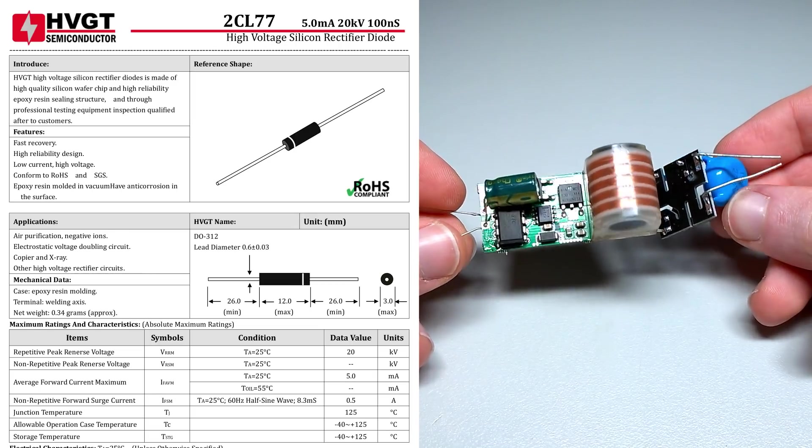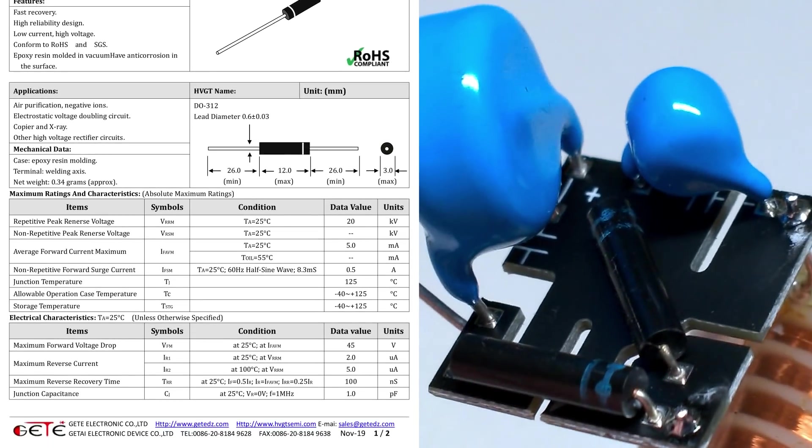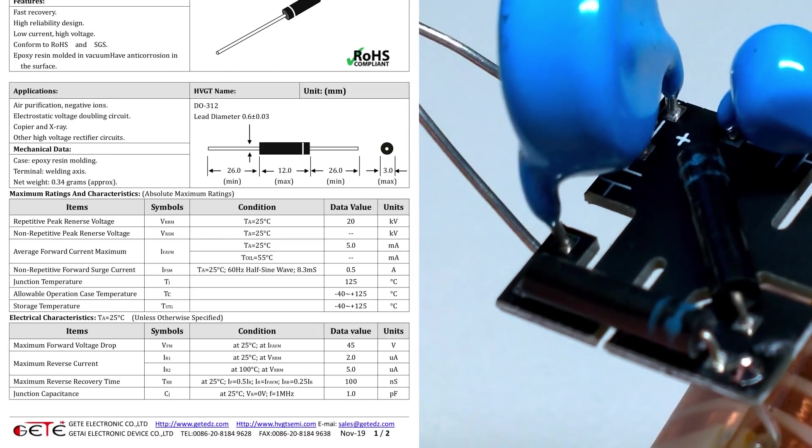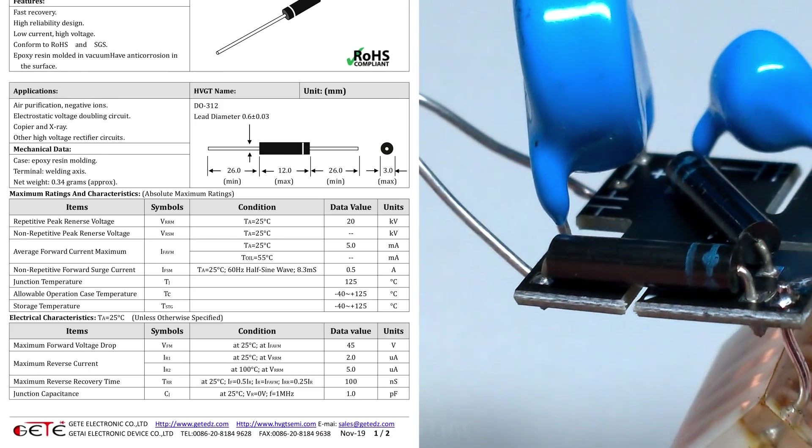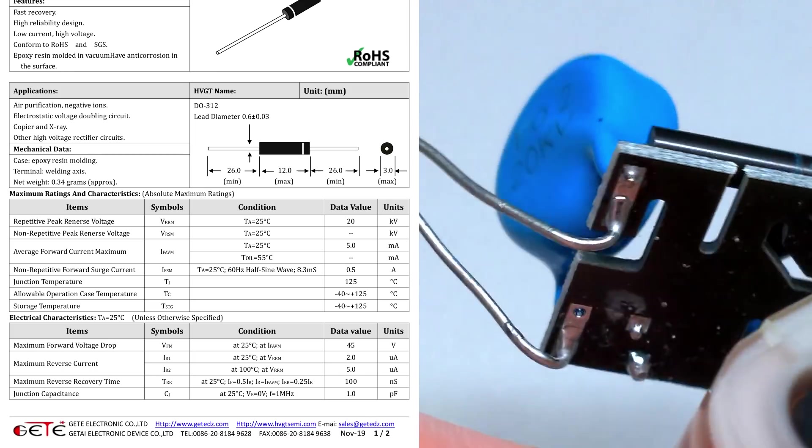The applications list air purifiers, negative ion generators and electrostatic voltage doubling circuits. But I've more specifically seen these before in laser printers quite often in the high voltage circuits for the toner electrostatic stuff.